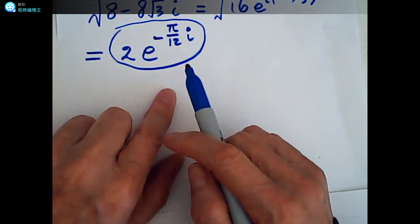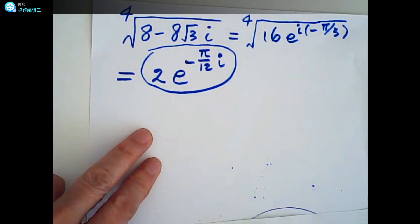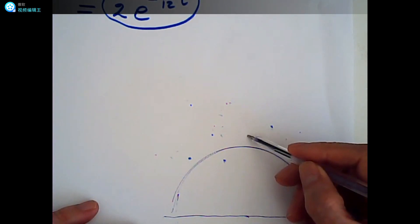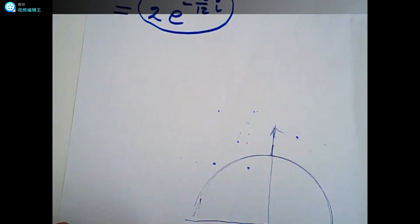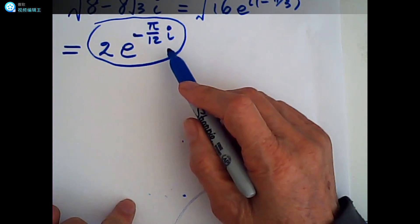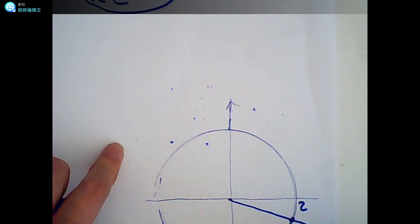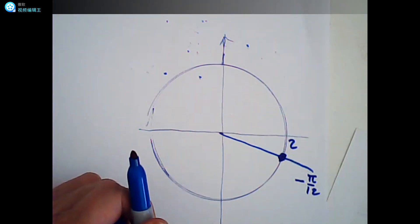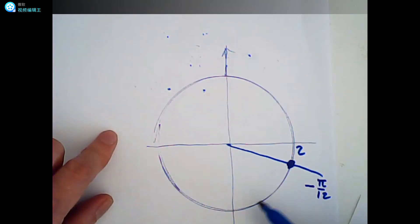This is my one root. I just need one root because from this root I can find the other three — this is my way. From the circle, the modulus is 2, so the radius is 2. This root is at negative pi over 12, somewhere here. This is my first root.